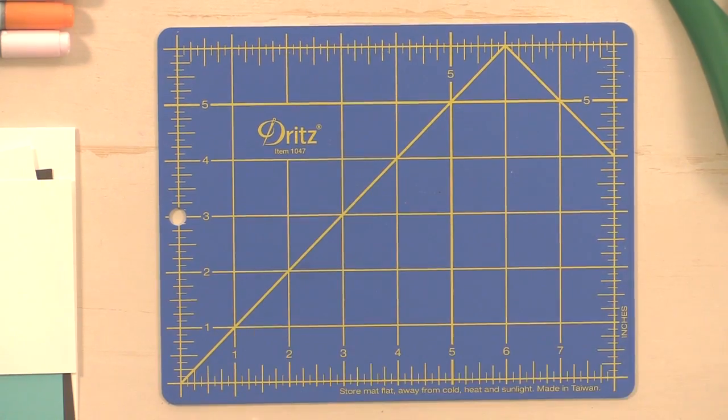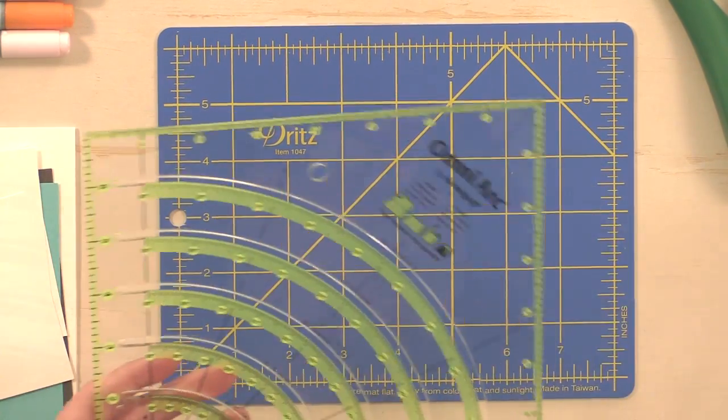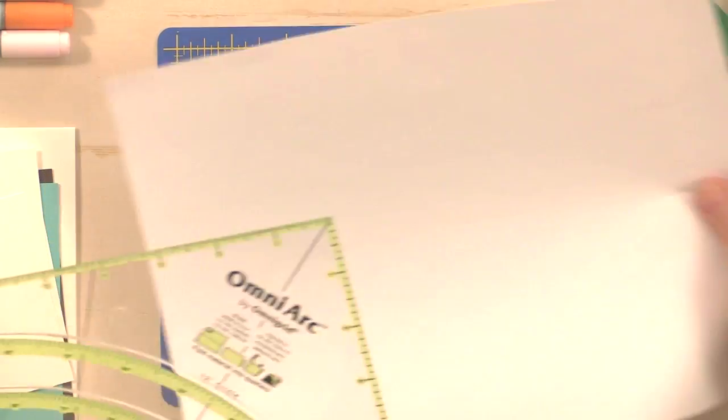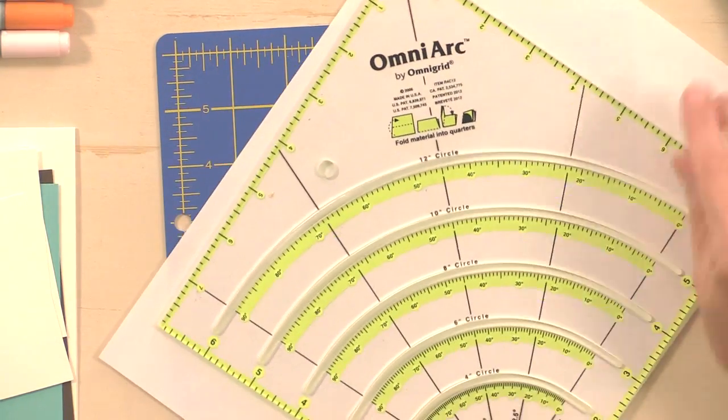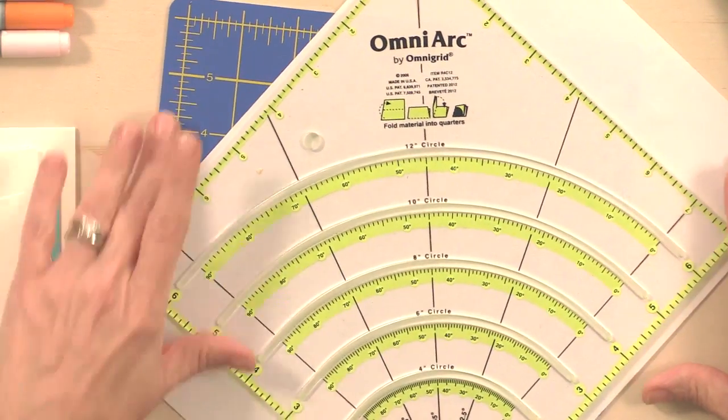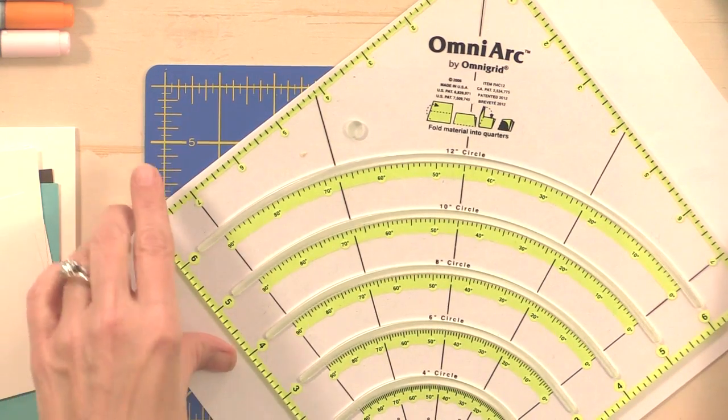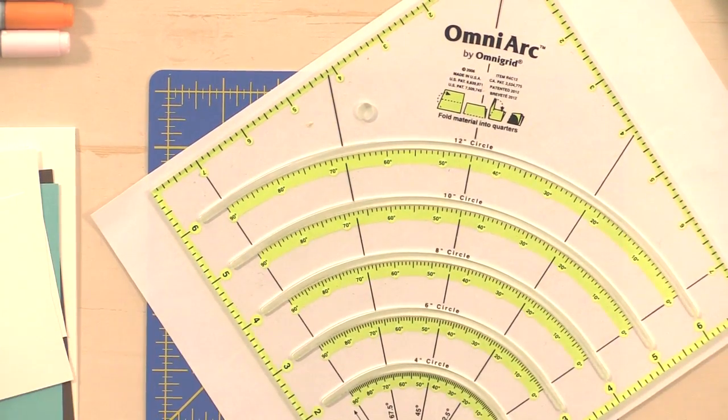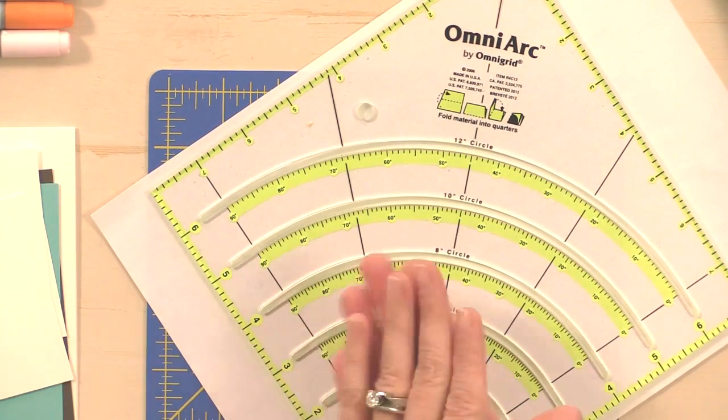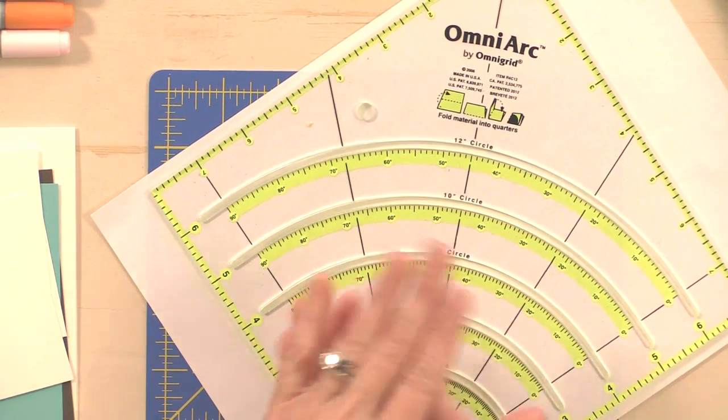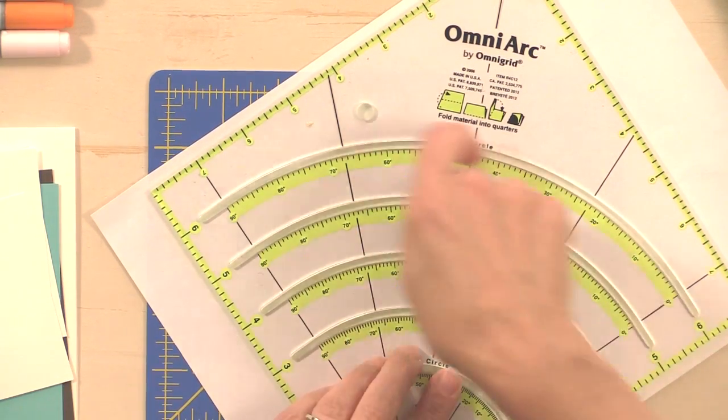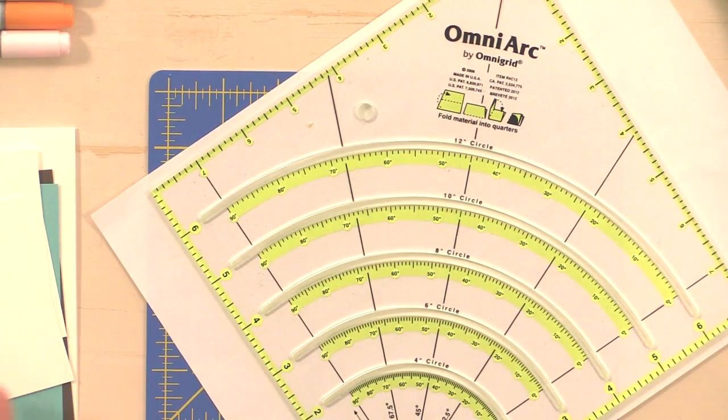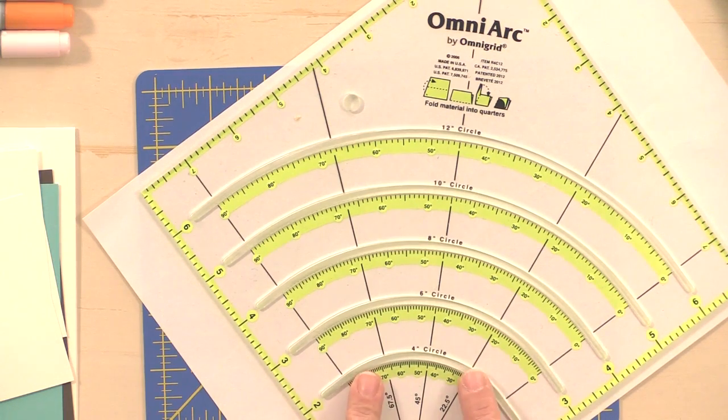And then I have, I admit, I went to Joann's and bought this with my 40% off coupon. This is an Omni Arc by Omnigrid, a quilter's arc. This allows you to create circles for quilting. You fold your fat quarter into half and half again, then you cut around and it makes a big circle so that you can quilt circles. But it's also really cool for cutting paper and cutting paper on curves.